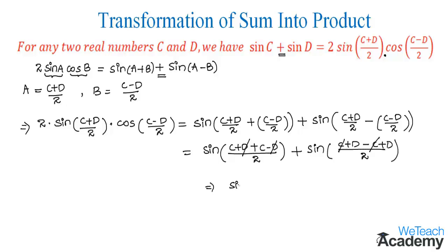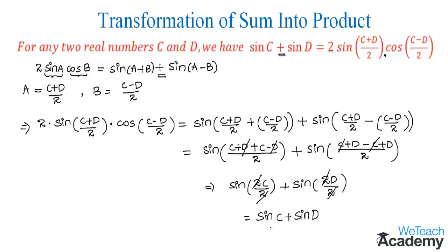We get sin((2c)/2) plus sin((2d)/2). The 2 in the numerator and denominator cancels in both terms, giving us sin(c) plus sin(d). This is exactly the value on the LHS. Therefore, we have transformed the sum of two trigonometric ratios into the product and proved the formula: 2·sin((c plus d)/2)·cos((c minus d)/2) equals sin(c) plus sin(d).